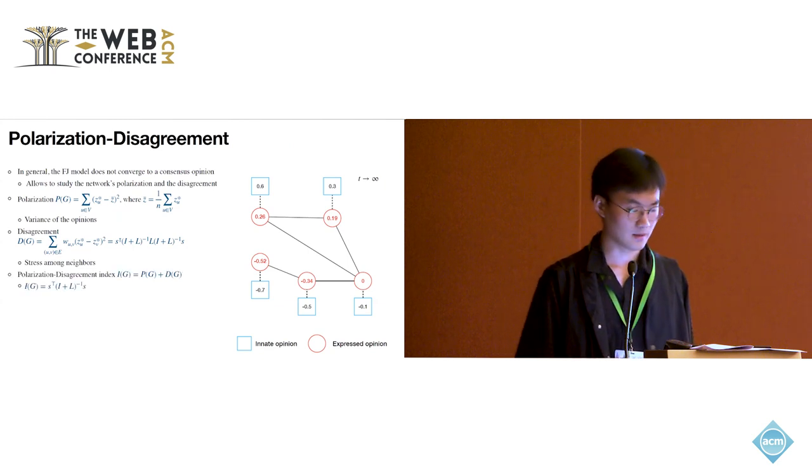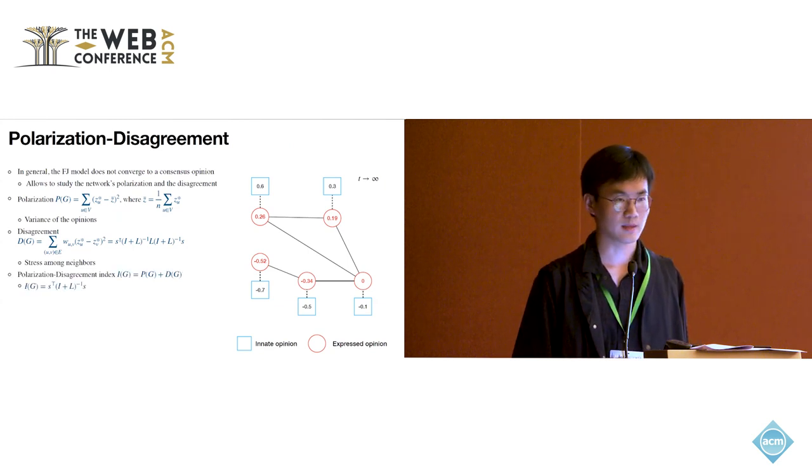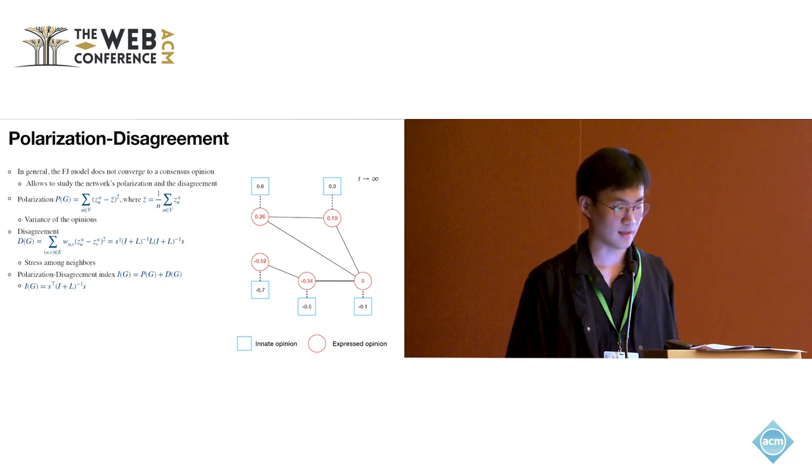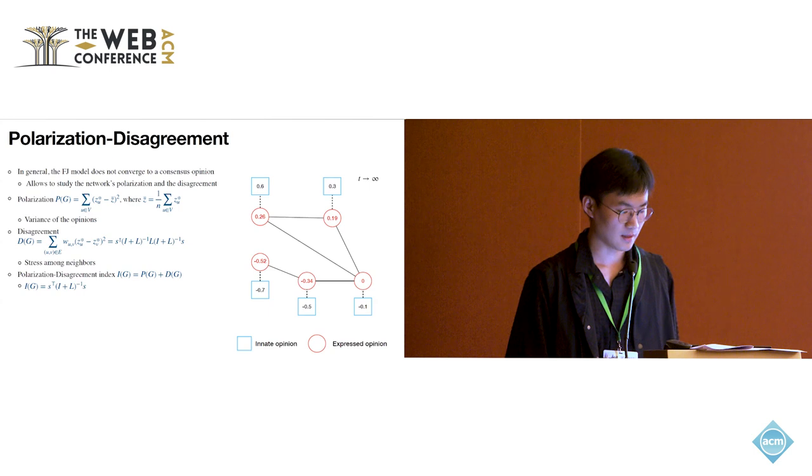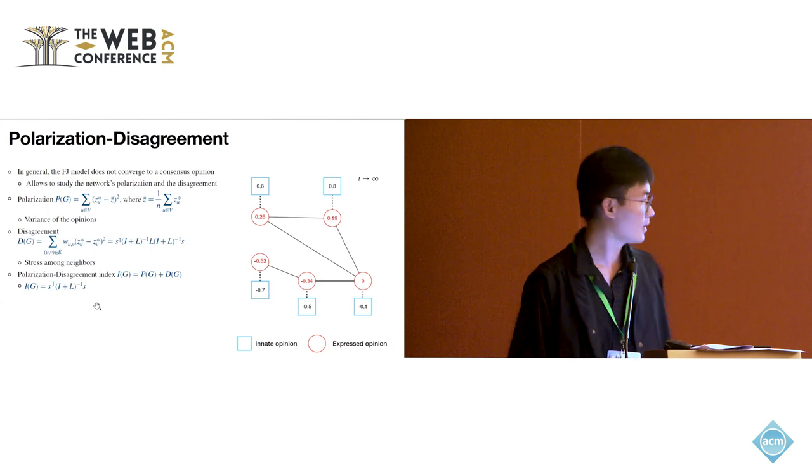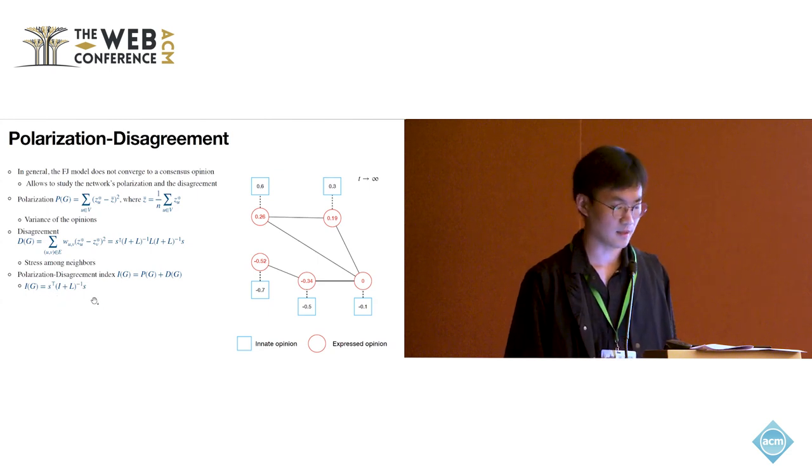With these two terms, we could define the polarization disagreement index as the sum of these two terms, and it could be expressed as innate opinion s transpose times I plus L inverse times innate opinion s. This is the term that involves innate opinion and the equilibrium expressed opinion.